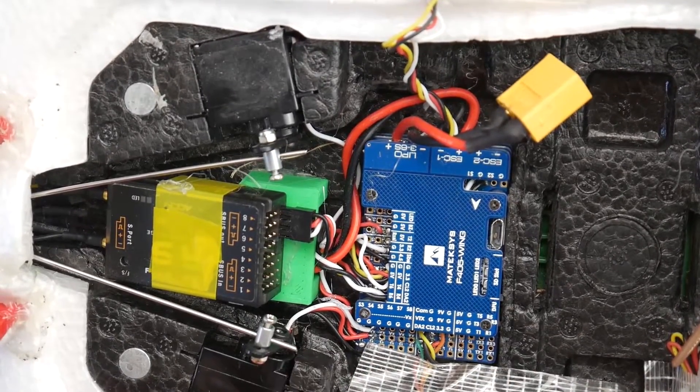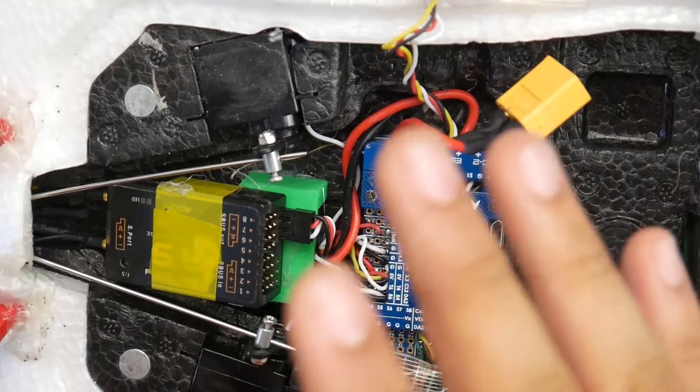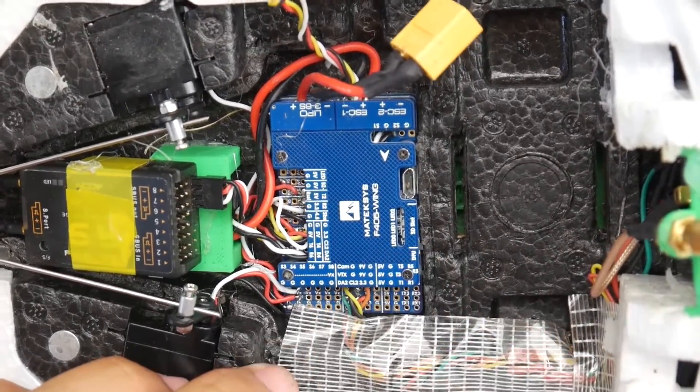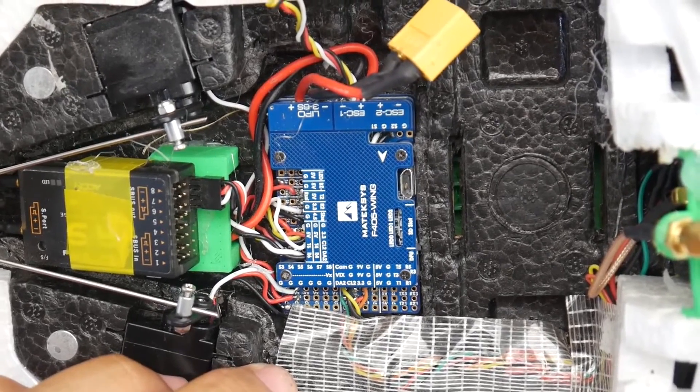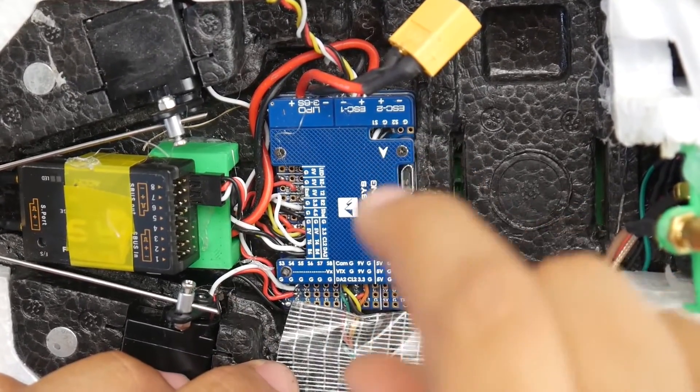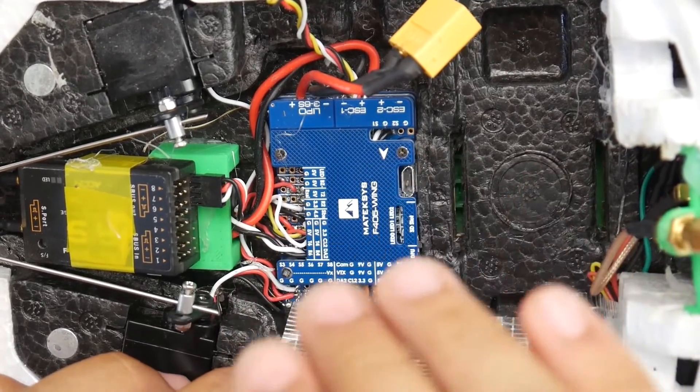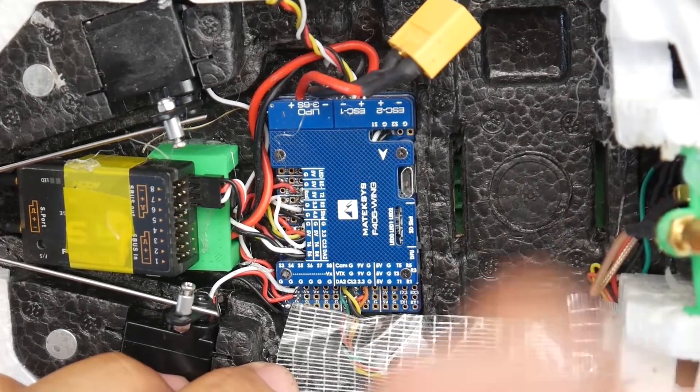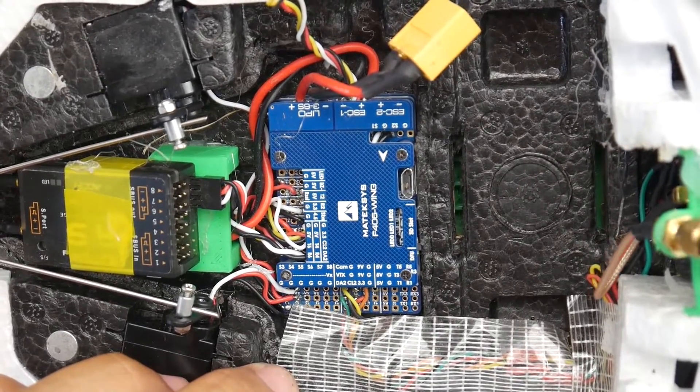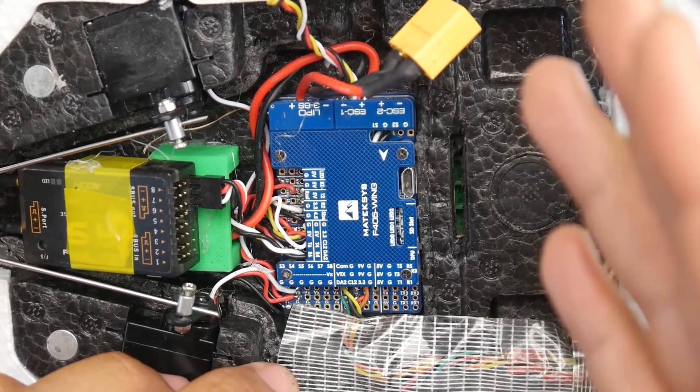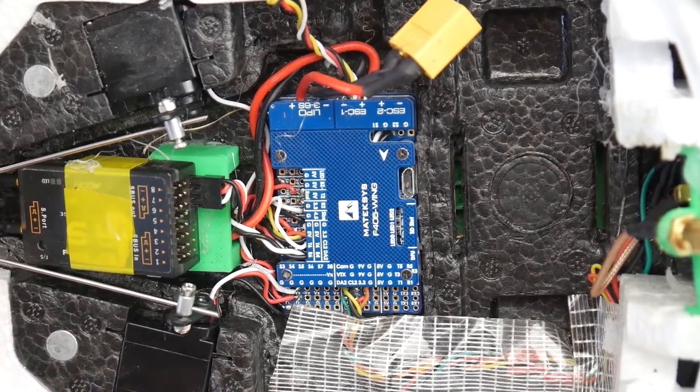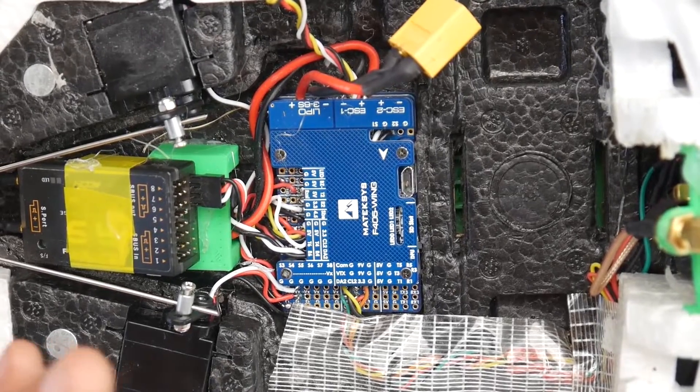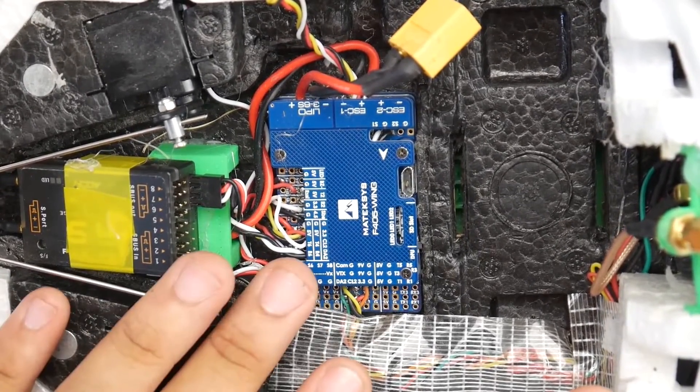That's what happened to me before with the stock ESC, which I highly recommend you change. For the flight controller, I'm using the Matec F405 wing, which I find to be a phenomenal wing flight controller. Whether it's this one or the smaller one, the F411, I think those are absolutely phenomenal wing flight controllers. There's also an F7 version which is pretty cool, might be a little overkill, but this is working out just fine for me. Matec is top-notch quality.